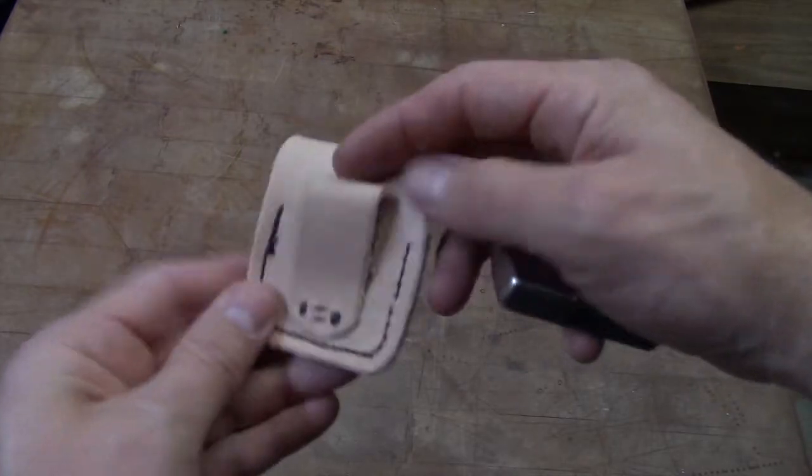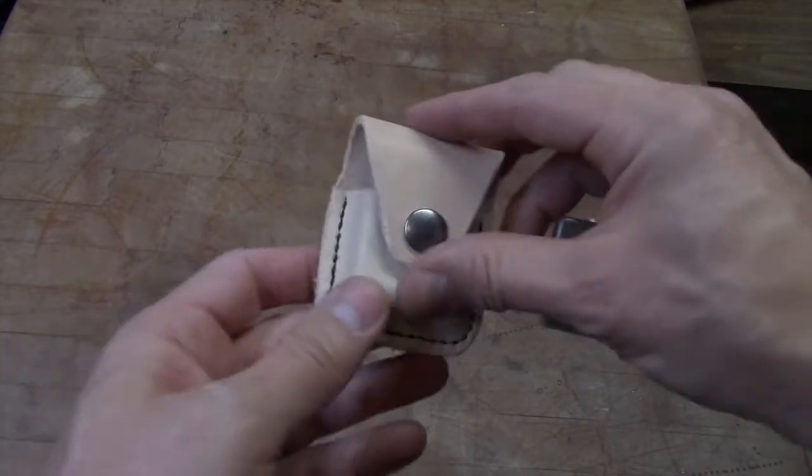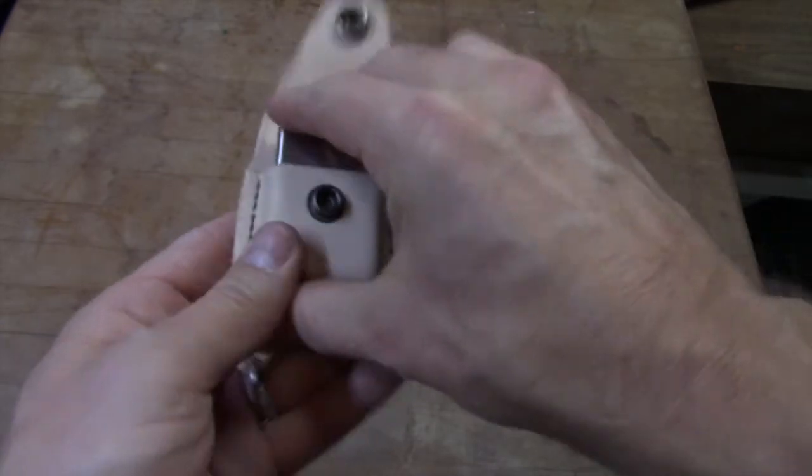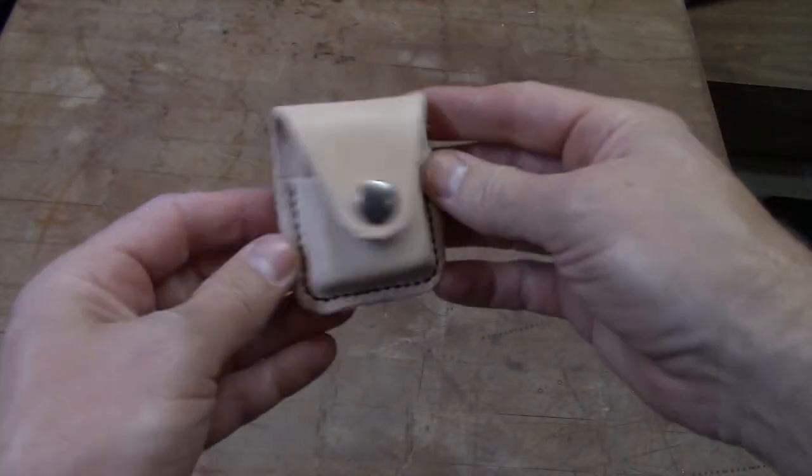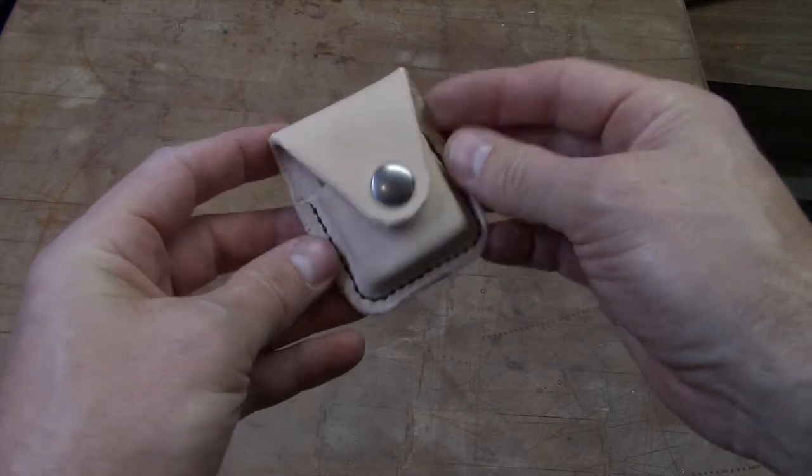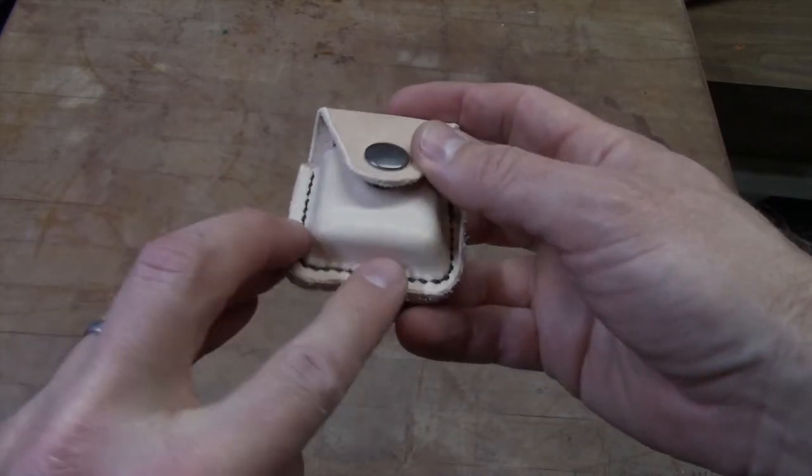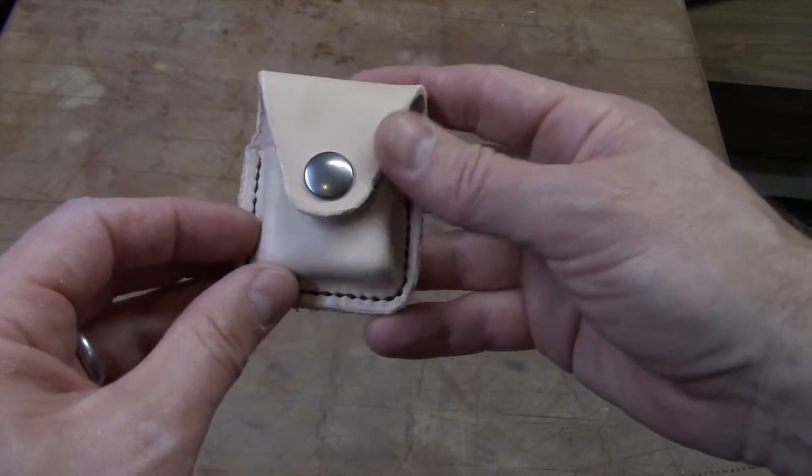So here's our first test as we near the finished product. Everything is coming along nicely. The lighter fits inside of here perfectly. Go ahead and close that up. But I also want to add a small hole here in the bottom, right here, to make it easier to push the lighter out.